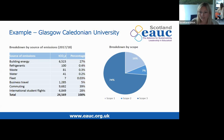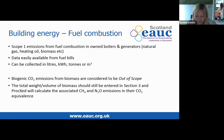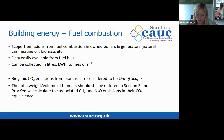The GHG protocol accepts that data accuracy for commuting may be lower, but states it is more important to understand the relative magnitude and possible changes to scope 3 emissions. For building energy consumption: emissions from fuel combustion in owned boilers and generators are scope 1 — this includes natural gas, heating oil, and biomass. Data is easily available from fuel bills and can be collected in litres, kilowatt-hours, tonnes, or cubic meters. Note that biogenic CO2 emissions from biomass are considered out of scope and should be reported separately, though the total weight or volume of biomass should still be entered in section 3 so PropX can calculate associated CH4 and N2O emissions.